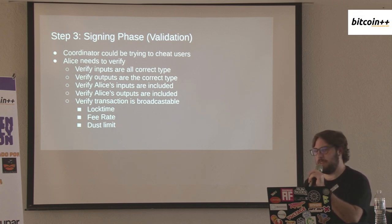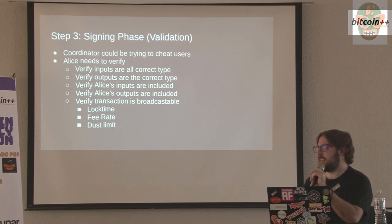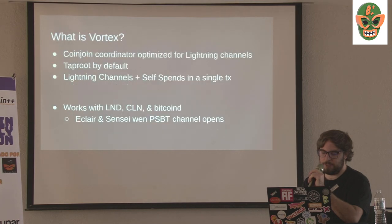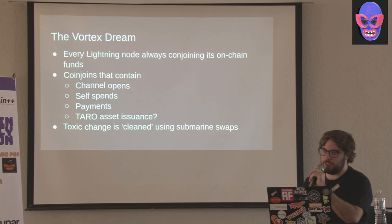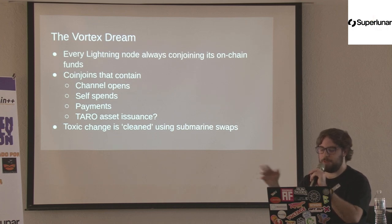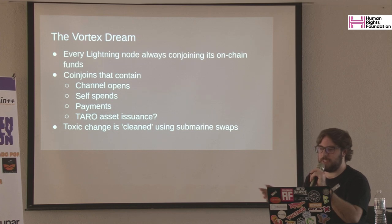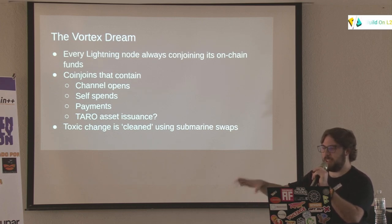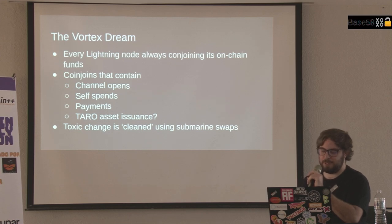Right now the mainnet setup uses five million sats. The amount is a hard problem because if the dream of everything in one coin join — channel opens, self-spends, payments, Taro asset issuances — all have to share the same denomination, five million sats might be too small for a business opening large channels but a good amount for a personal self-spend. Having one-bitcoin rounds would require being fairly wealthy to participate. Taro asset issuances want small values since most value is in the asset itself, not the bitcoin. So it's hard to unify all use cases with a single amount — five million sats was kind of picked arbitrarily, but hopefully it works.